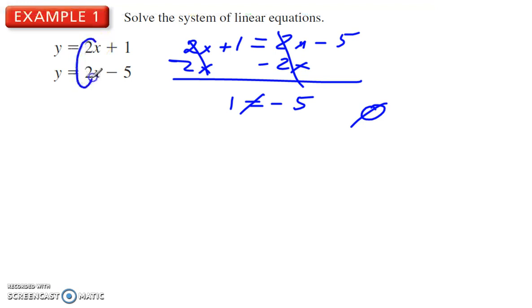2x and 2x, the slopes are the same. That means these lines are parallel. This one goes up 2 over 1, but their intercepts are different. So they're never going to cross, so there's no solution.